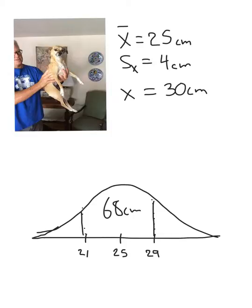Now, if we go out another standard deviation, that would be we add 4. So, that's going to be 33. And we take away 4, which is going to be 17. Now, we have 95 percent of the dogs of this breed are somewhere between 17 centimeters and 33 centimeters.